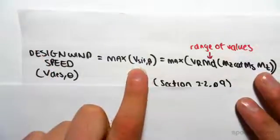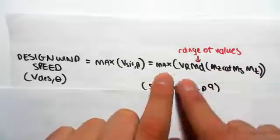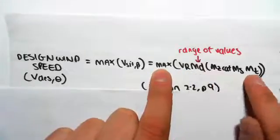V site comma beta is known as the site wind speed, so it's going to be the maximum of the site wind speed which is VR MD MZ,cat MS MT.